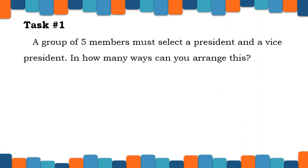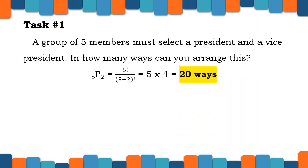If you have watched our last video lesson on permutations, I think you remember Task number 1: A group of 5 members must select a president and a vice president. In how many ways can you arrange this? We have 5P2 = 5 factorial over (5 minus 2) factorial = 5 times 4 = 20 ways. These are the 20 possible arrangements.